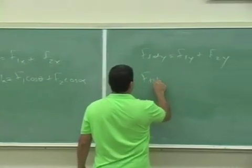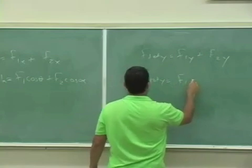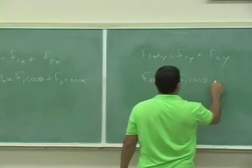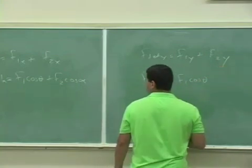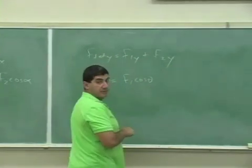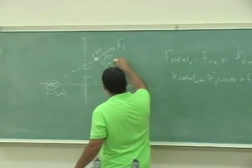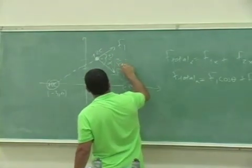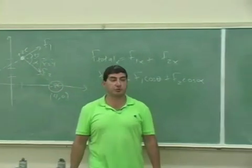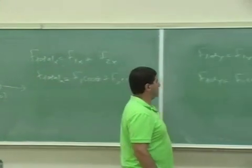And similarly here, F2Y is equal to F1 cosine theta. F2Y is going to be negative, right? The Y component of F2 is going to be down this direction, F2Y. So since it's negative, we subtract.